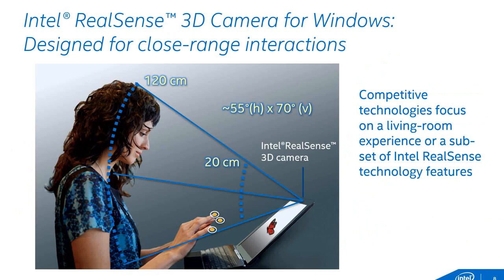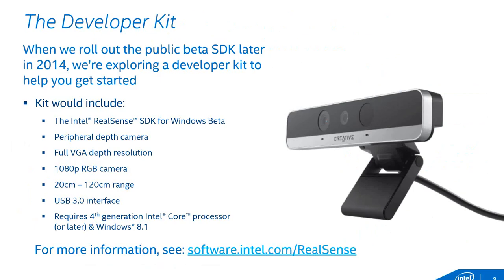The camera works in a range of roughly 20 centimeters (8 inches) to about 120 centimeters (4 feet). For gestures it's a bit shorter — about 20 to 60 centimeters, or 8 inches to about 2 feet. The conical dimensions of the depth sensor are 55 degrees horizontally and 70 degrees left to right. The RGB component is a full 1080p camera. It requires a USB 3 interface and a fourth-generation Intel Core processor (codenamed Haswell) running Windows 8.1.